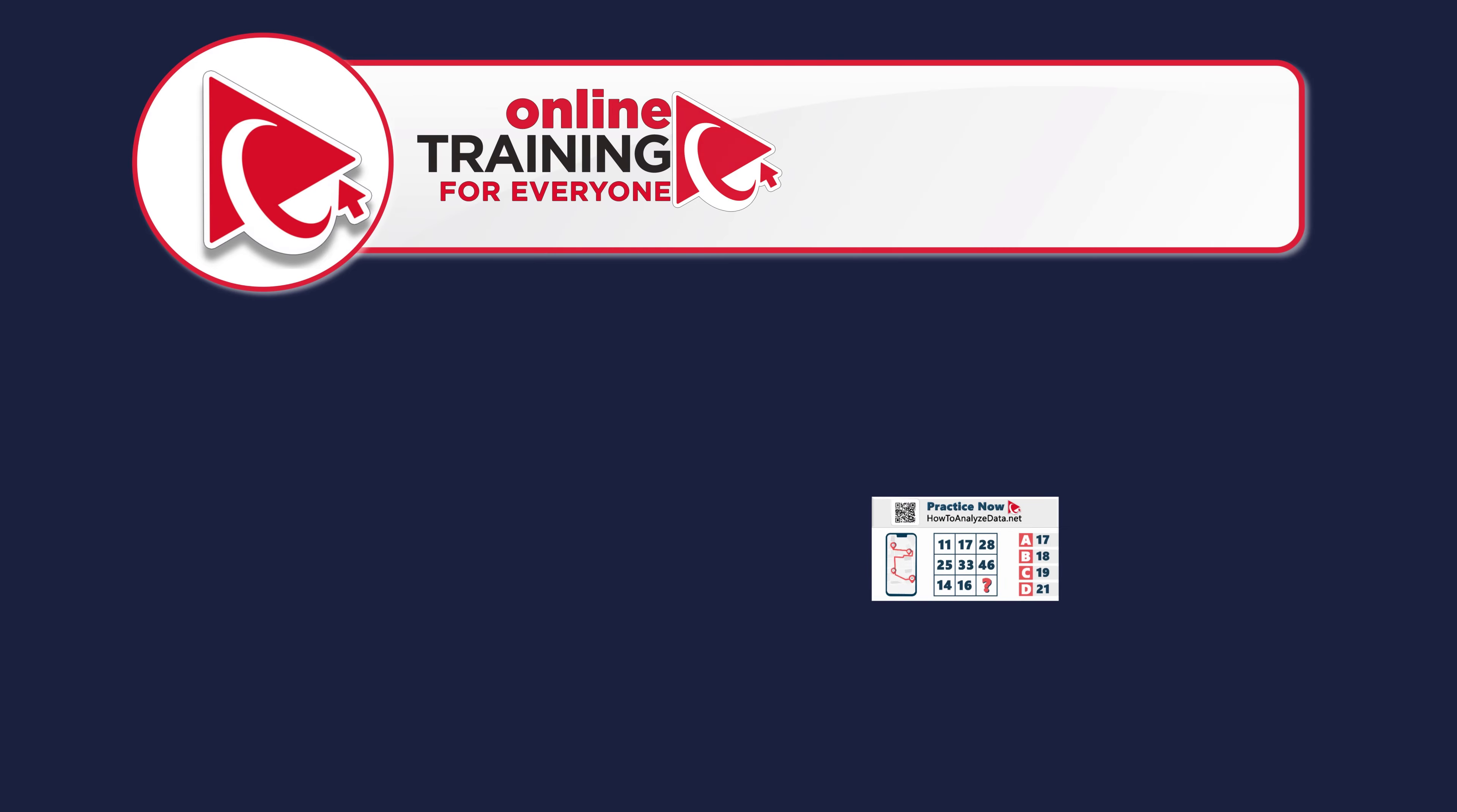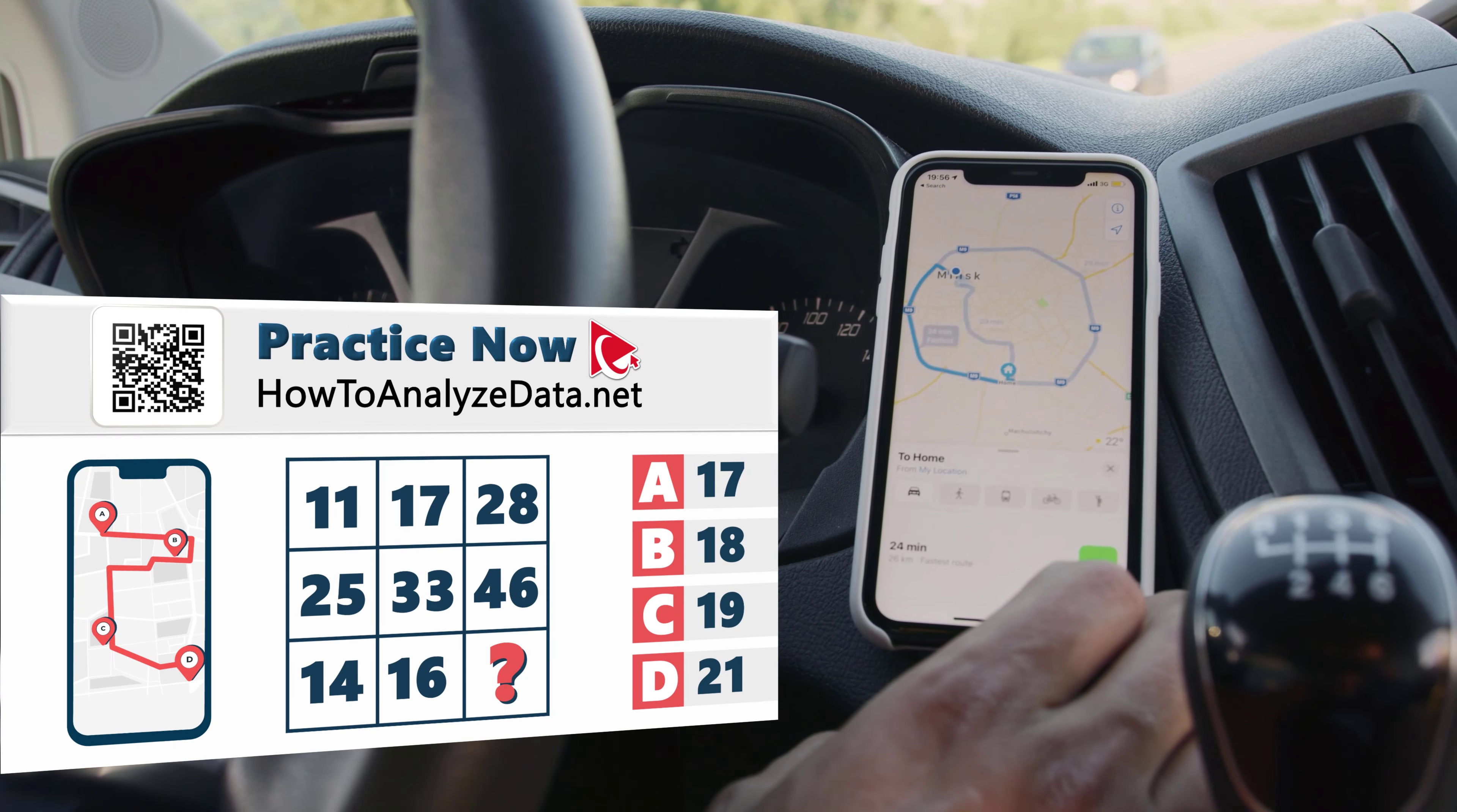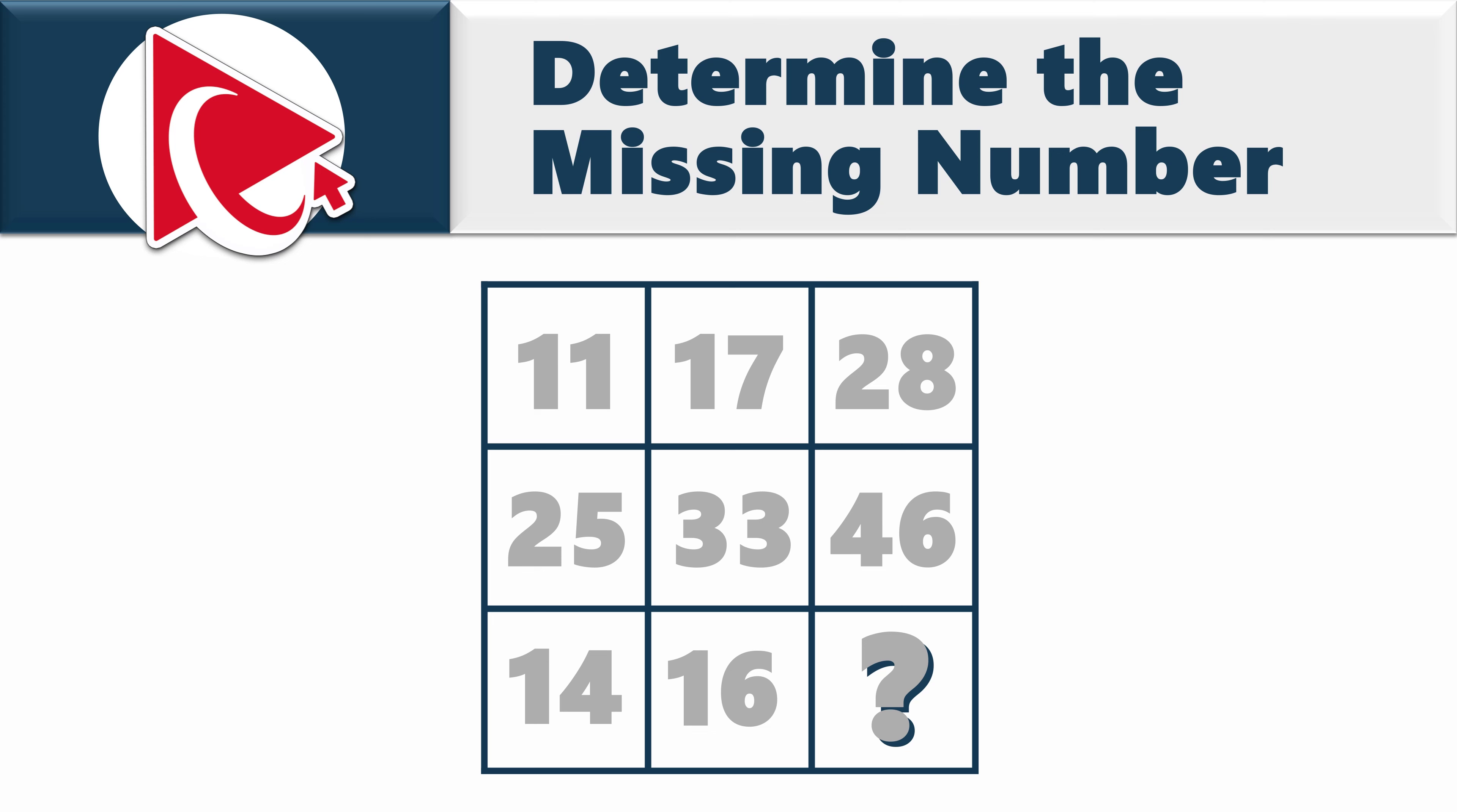You know, I tried this question, and this particular one is like following a GPS which constantly says recalculating. So I'm taking a passenger seat and delegating the full responsibility of solving this particular one to you. You're presented with a 3x3 matrix. The numbers in the first row are 11, 17, and 28.